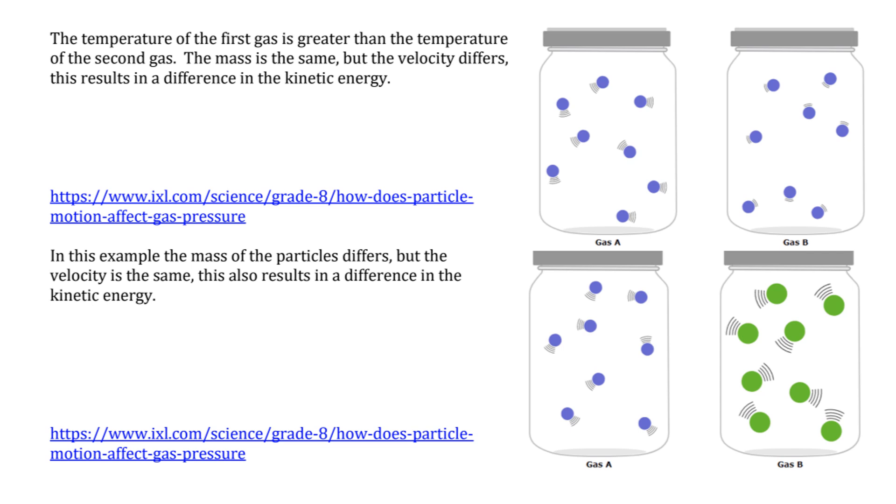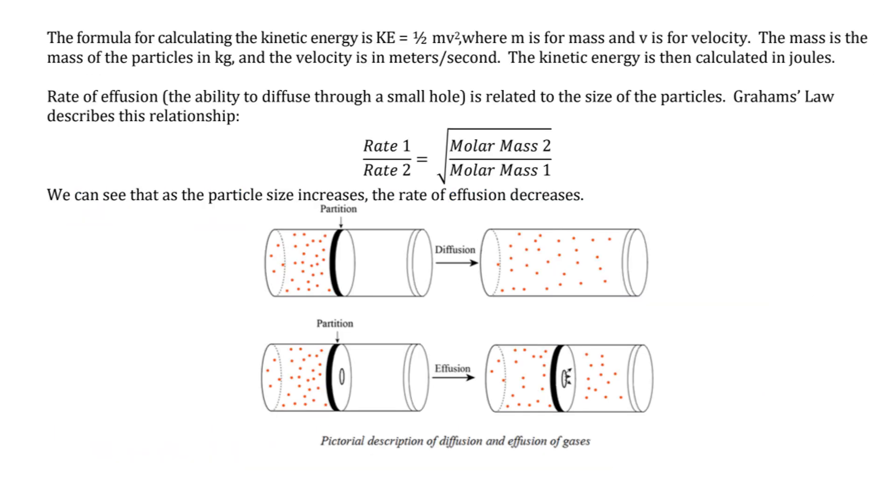In this next example, the mass of the particle differs, but the velocity is the same. This also results in a difference in kinetic energy. The formula for calculating the average kinetic energy equals half mass velocity squared. The mass of the particles is in kilograms, the velocity is meters per second, and then the kinetic energy is calculated in joules.